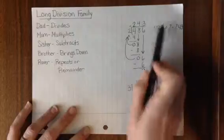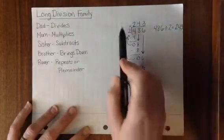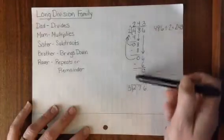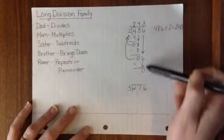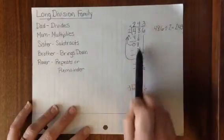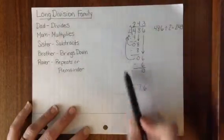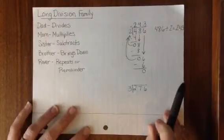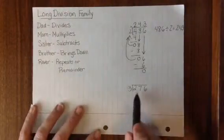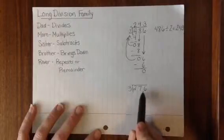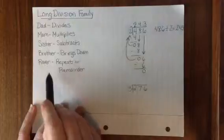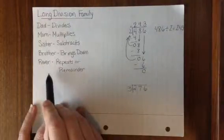If you notice, we are using our lined loose-leaf paper to help us organize our place value columns. It keeps our hundreds separated from our tens, separated from our ones, and keeps our long division problem very neat. If we look at another problem, 276 divided by 3, we use those same long division family steps in this problem.